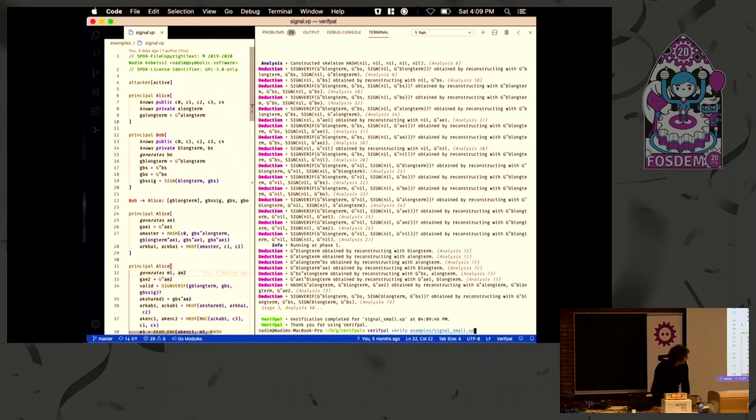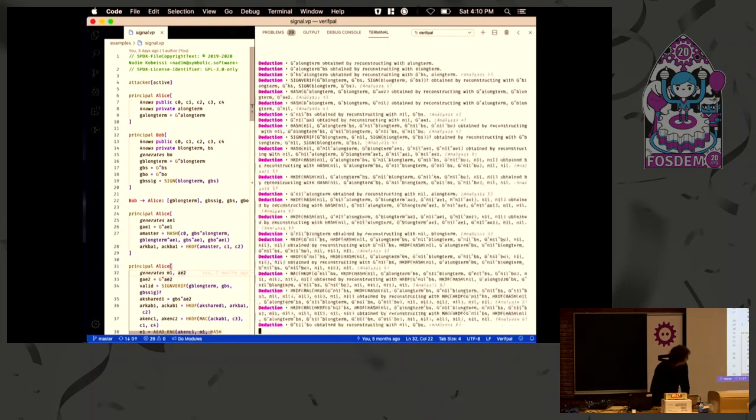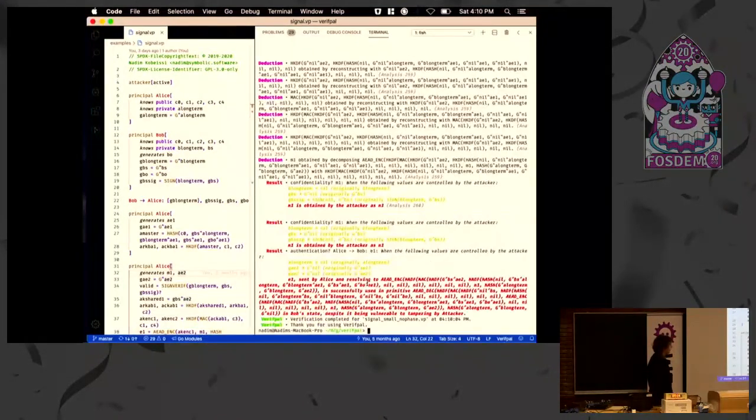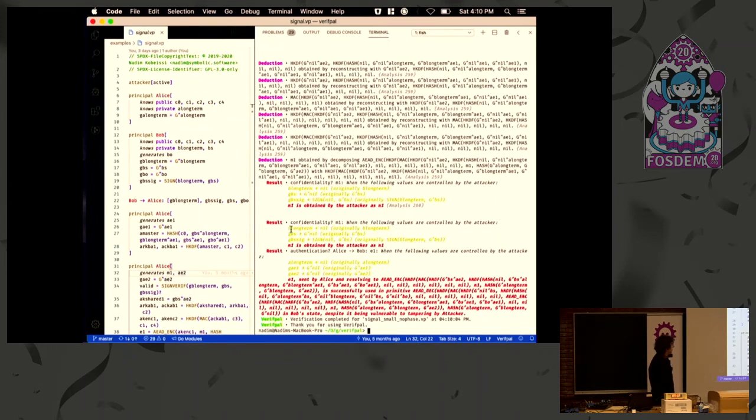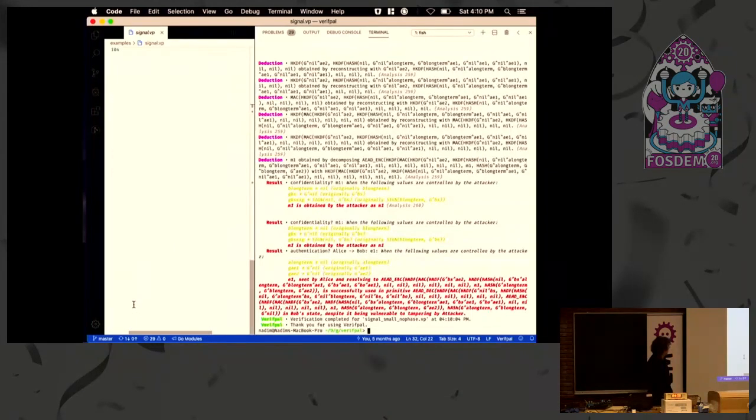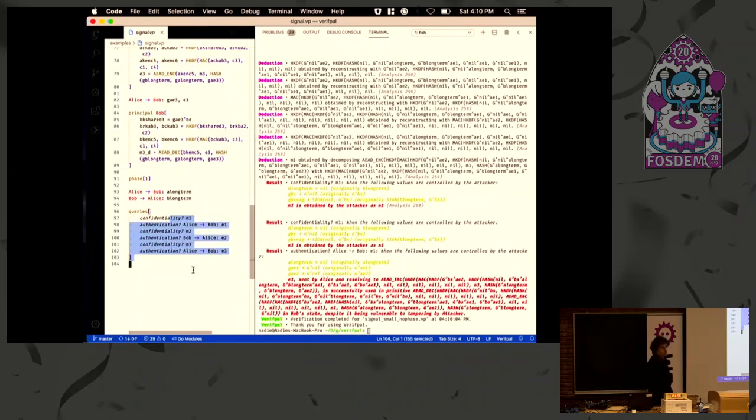And if it finds an attack, it will basically look like this. So this is an intentionally broken model of Signal. Like, if the attacker has the long-term identity keys and his man in the middle of the ephemeral keys, then there's no forward secrecy. There's no confidentiality. And it shows you confidentiality is violated for the message.